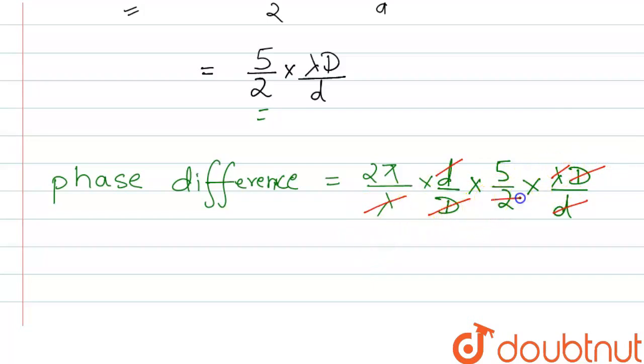And here we see that 2 and 2 both are cancelled out. So, what we left with, we left with 5 and π. So, phase difference is 5π.